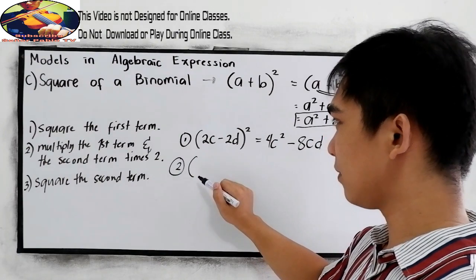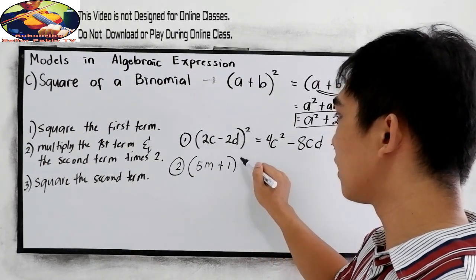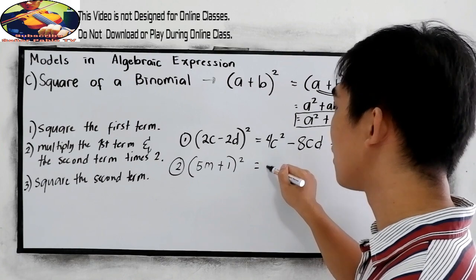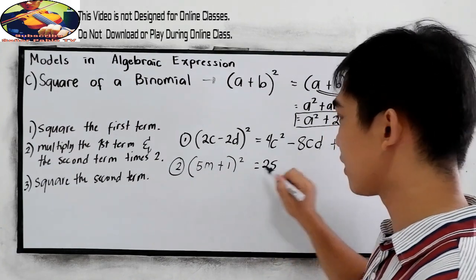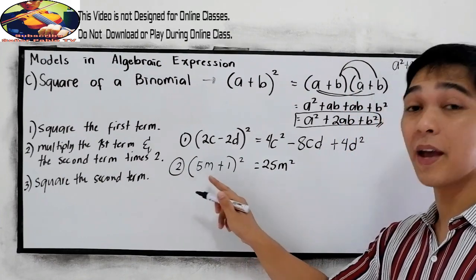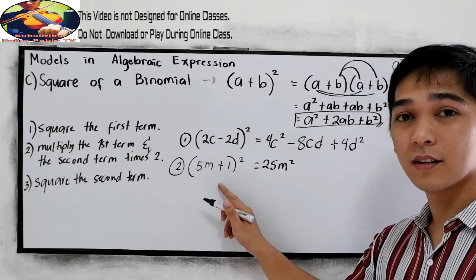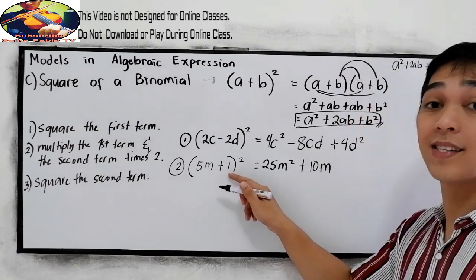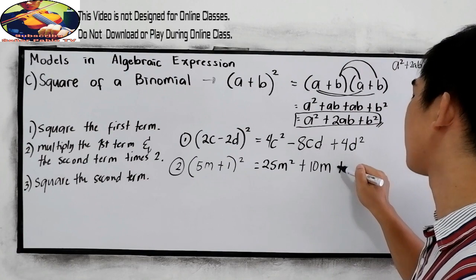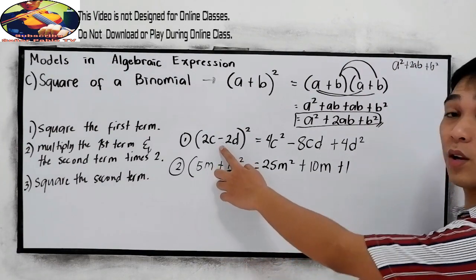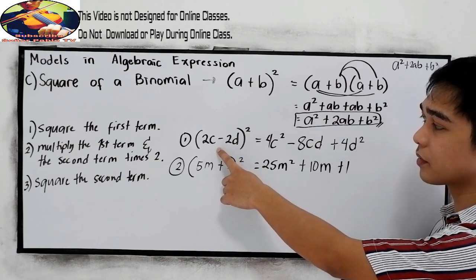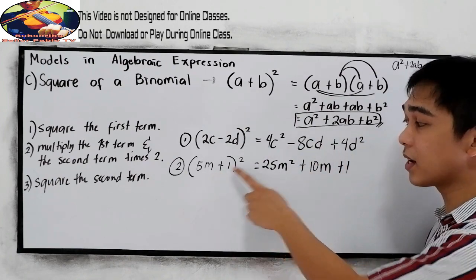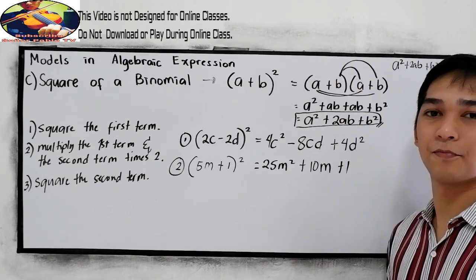Number two: 5m plus 1, squared. Square the first term: that is 25m². Multiply the first term and the second term: 5m times 1 is 5m, times 2 gives positive 10m. Square the second term: 1 times 1 is positive 1. Notice the sign pattern: if we have a minus sign in the binomial, the pattern is positive, negative, positive. If we have a positive sign, all terms are positive.